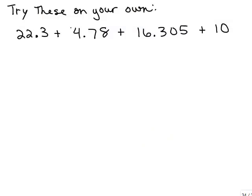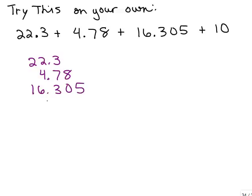Okay, so let's try this problem. I meant to try this problem on your own. Put the video on pause and try this problem, and then put it back on. Let's see how you do. So what I'm going to do is simply put all these numbers vertically, but I'm going to line up the decimal points. So I've got 22.3, and this is why you have to be careful and neat in math, 4.78, 16.305, and 10. Now where is the decimal point on the 10? You don't see it, but it's after the 10. So we've got 10 point.